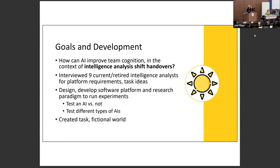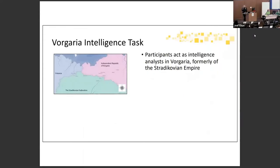Our goal is to understand how AI can improve team cognition in the context of intelligence analysis shift handovers. We interviewed nine current or retired intelligence analysts for platform requirements and task ideas. We designed and developed software platforms and a research paradigm to run experiments, starting by testing AI versus no-AI. To prevent bias from knowledge of the current political situation, we created a fictional world set 10 years in the future. Participants act as intelligence analysts for a country named Vorgaria, which broke off of the Stratacovian Empire.